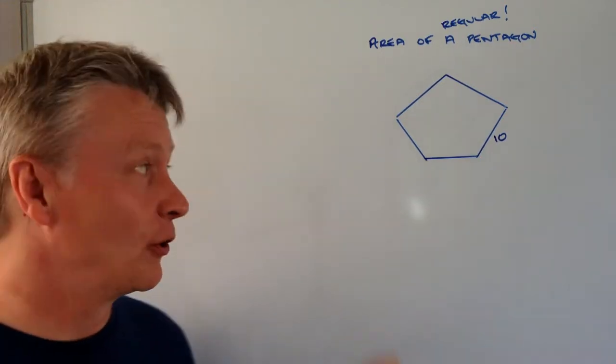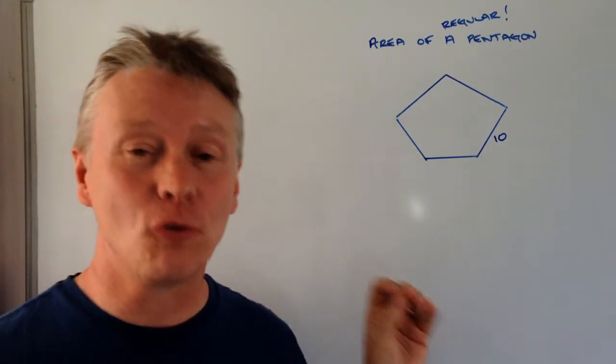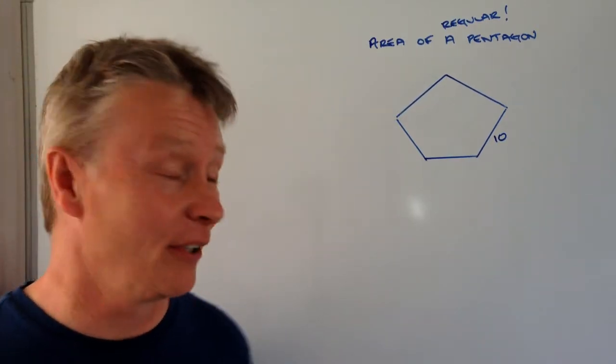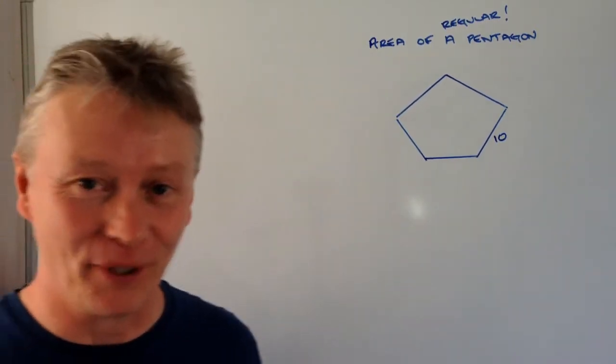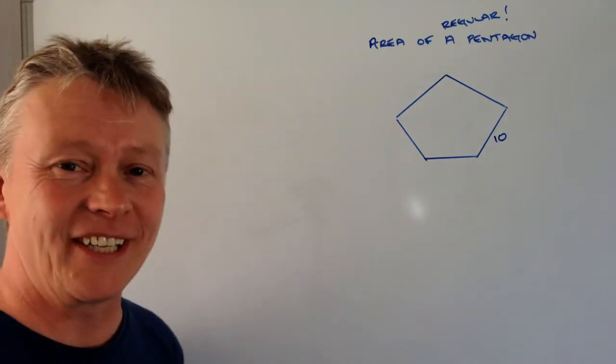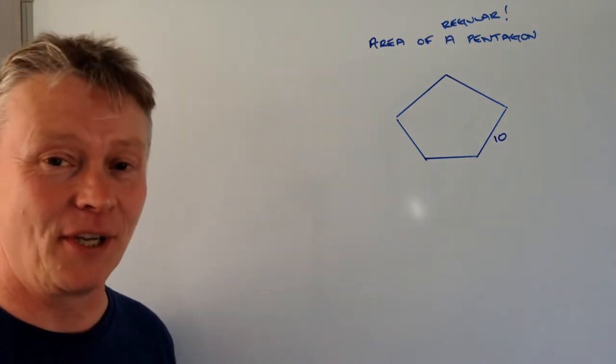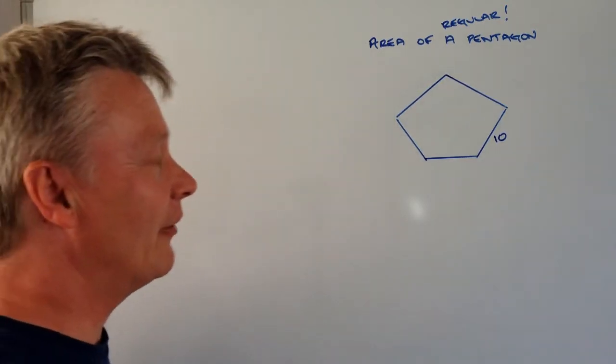Hi, in this particular video we're going to look at working out the area of a regular pentagon. Hopefully the drawing in your example is going to be a little bit better than the one I've drawn up on the board. But hopefully you'll get the idea it's a regular, so it means that each of these sides is 10 cm and we're being asked to work out the area.